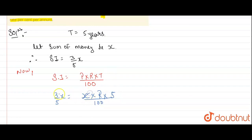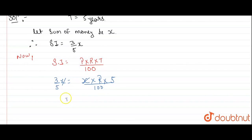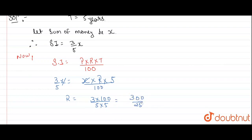From this, X will be cancelled. Now R will be equal to 3 × 100 divided by 5 × 5, which is 300 divided by 25, which is equal to 12 percent. So R is equal to 12 percent.